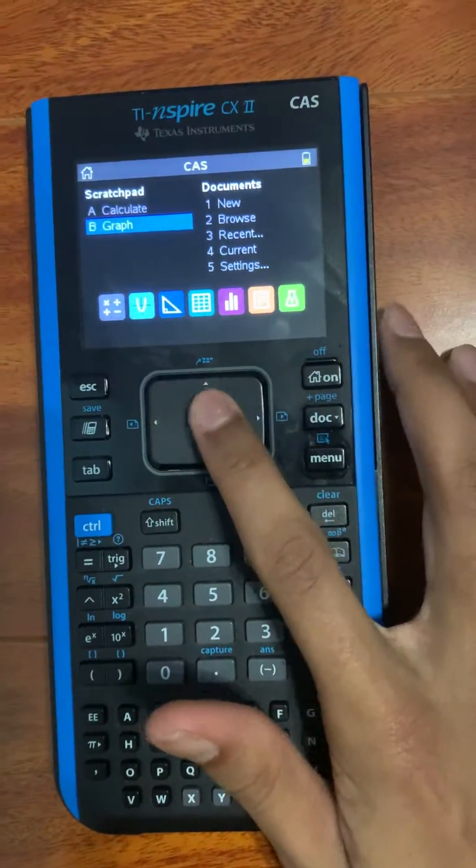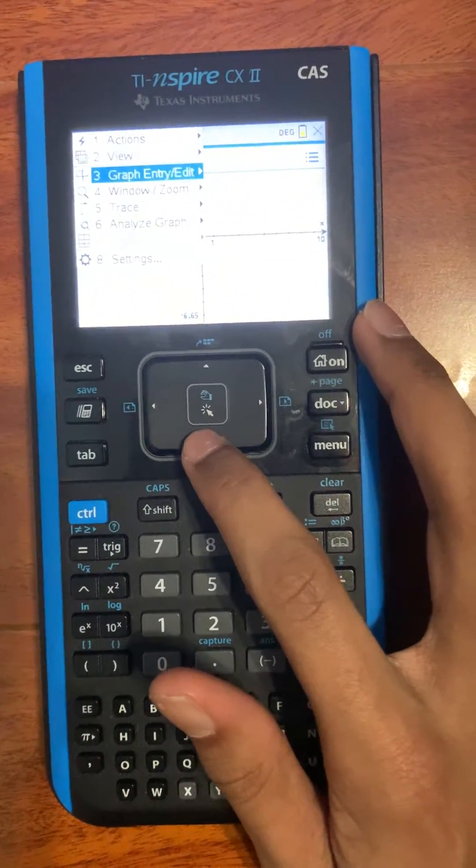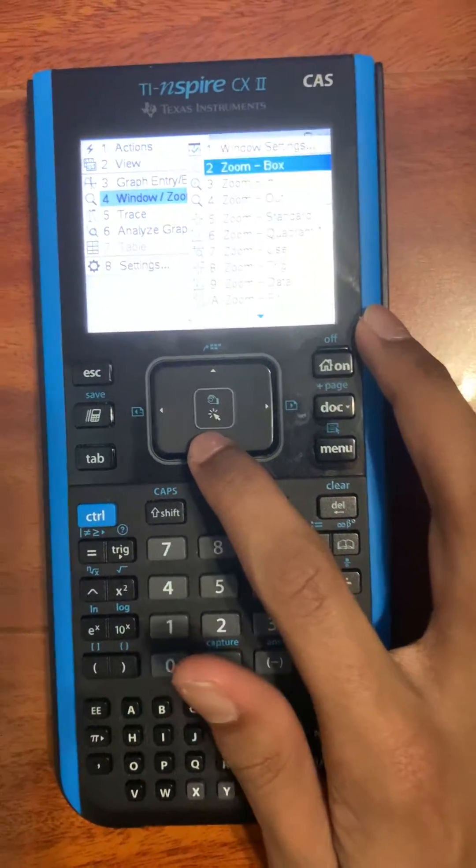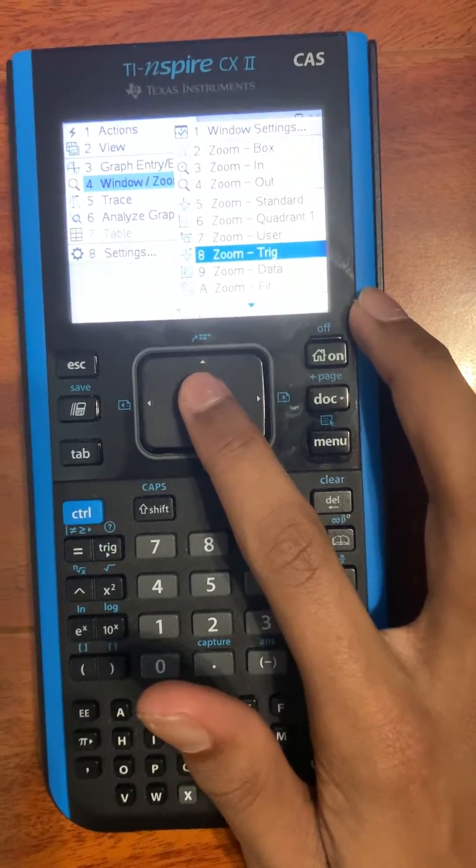The first step is go to graphing settings and go to window slash zoom. You'll set it to zoom and trig.